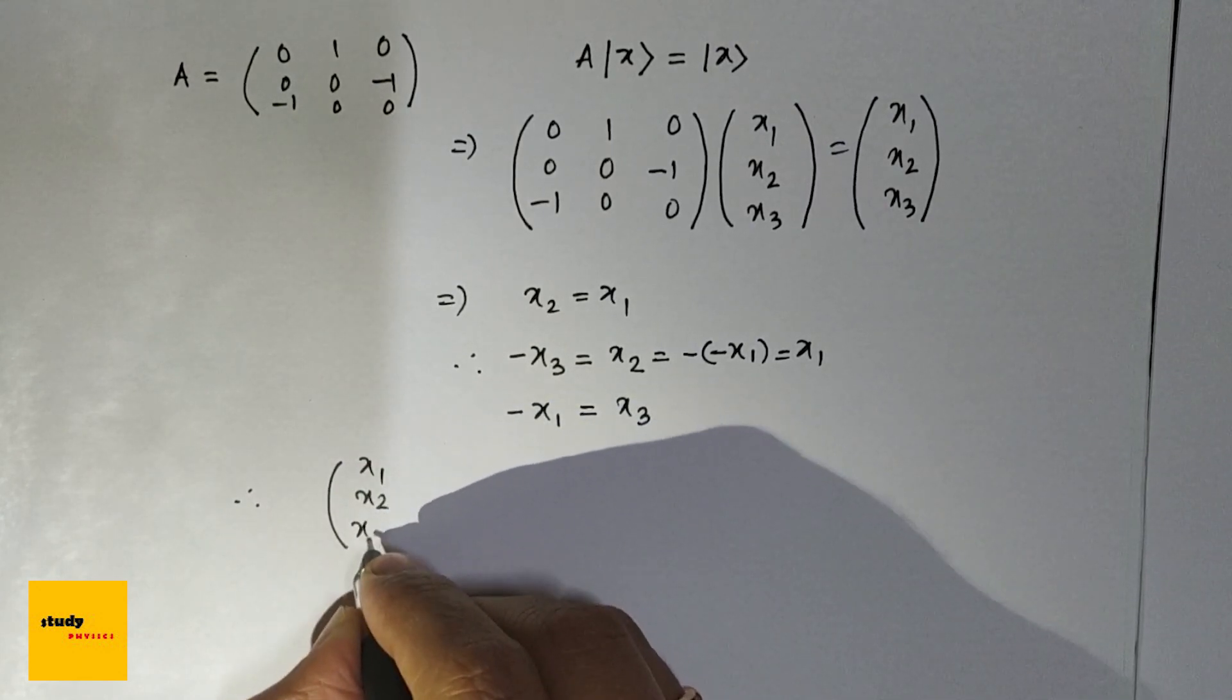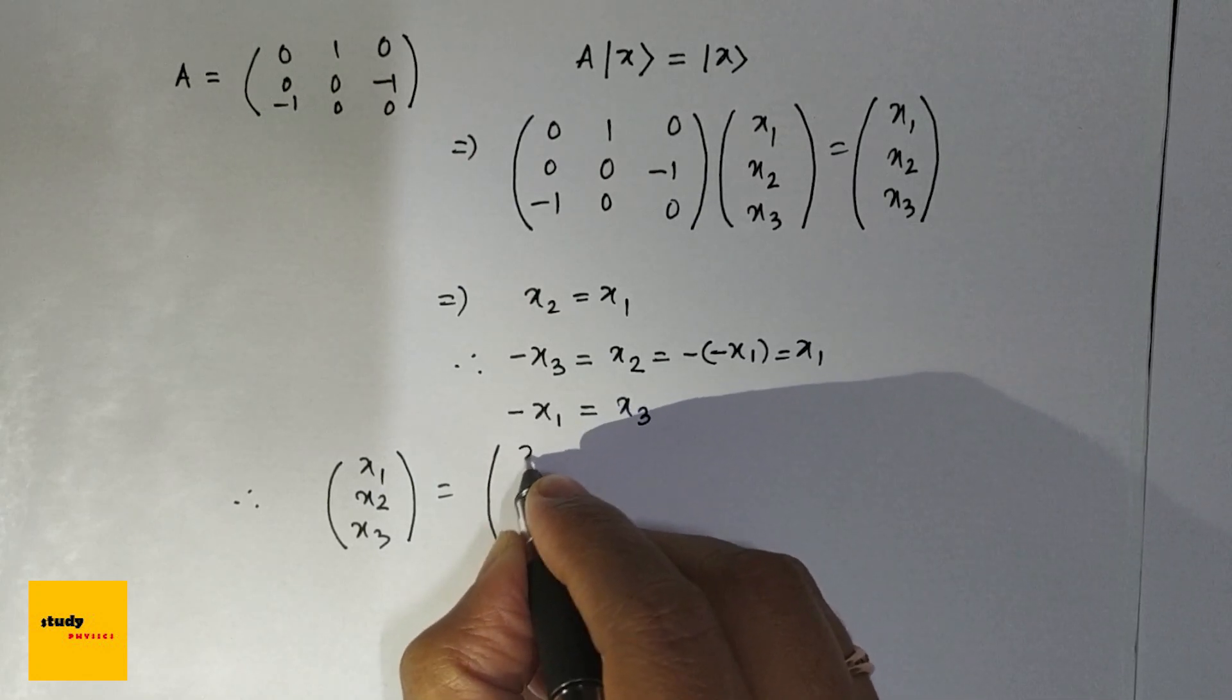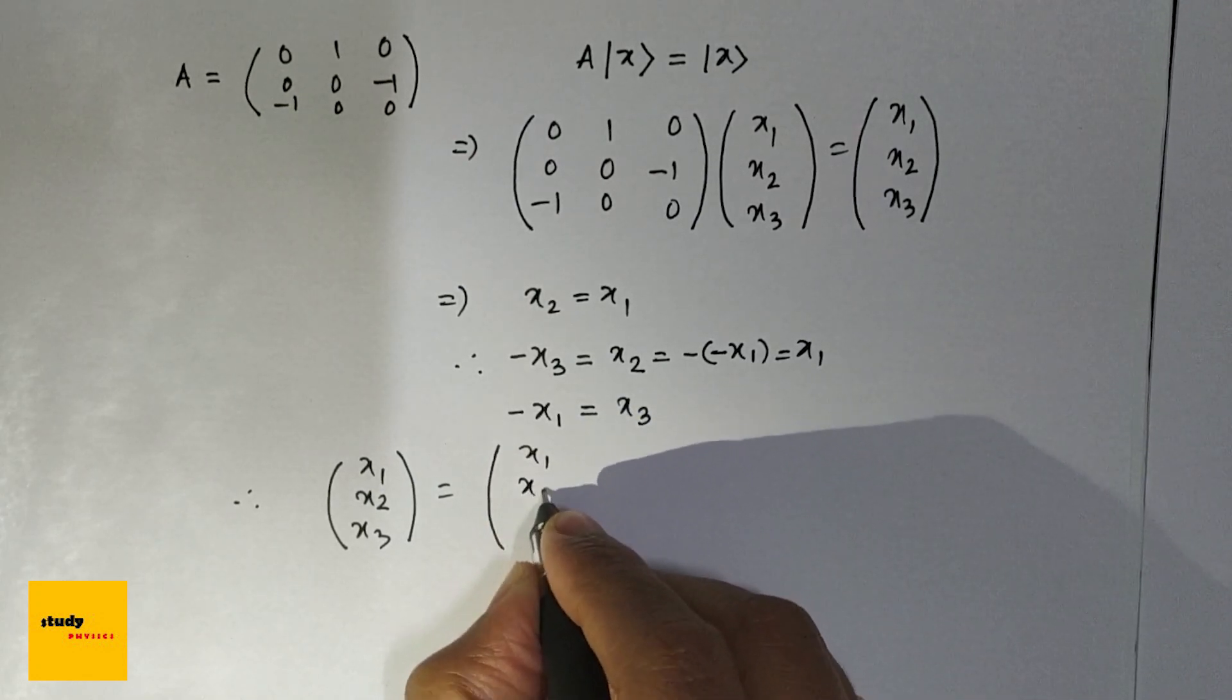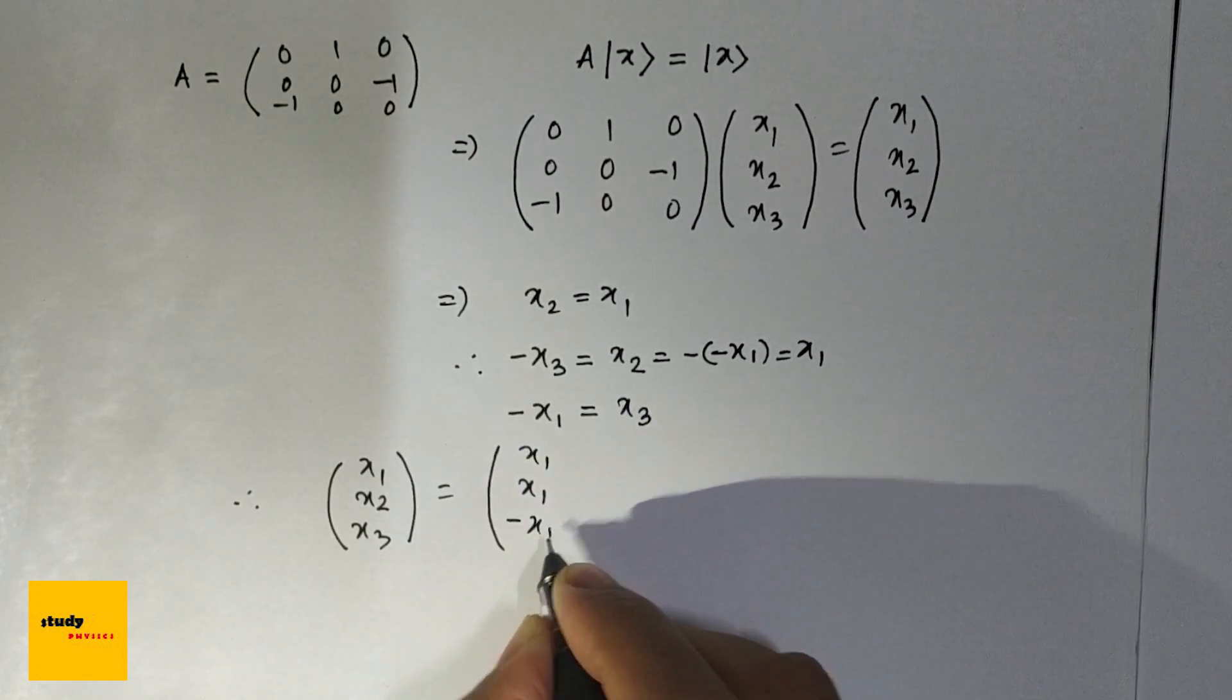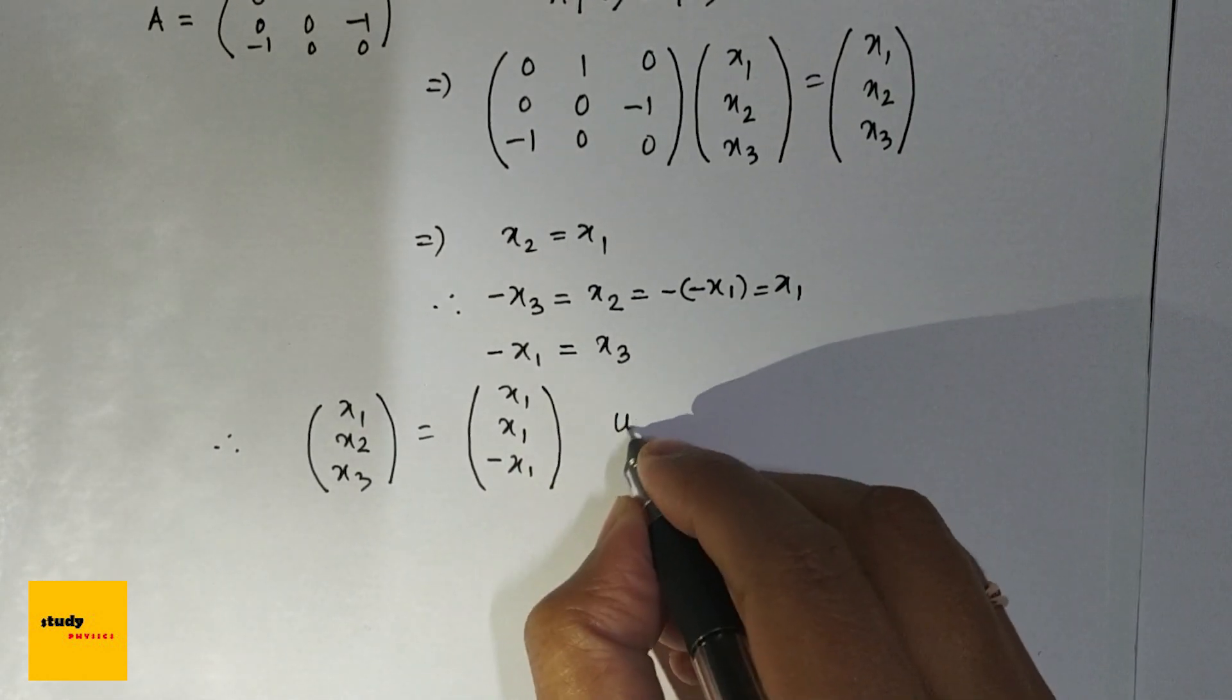So (x₁, x₂, x₃) equals (x₁, x₁, minus x₁). So from this we can write our unit vector...